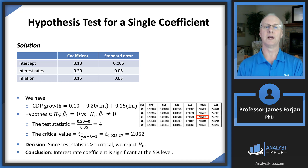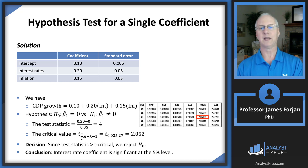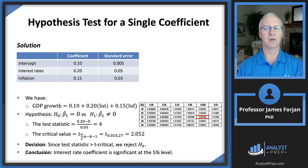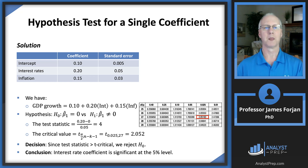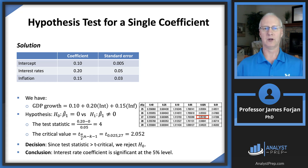We can quickly do the same for inflation: 0.15 divided by 0.03 equals 5, so the inflation coefficient is also significant at the 5% level. But remember, these hypothesis tests are for single coefficients. You cannot use the t-test to answer the question of whether all of the slope coefficients are statistically significant simultaneously — I'll come back to that in a few slides.